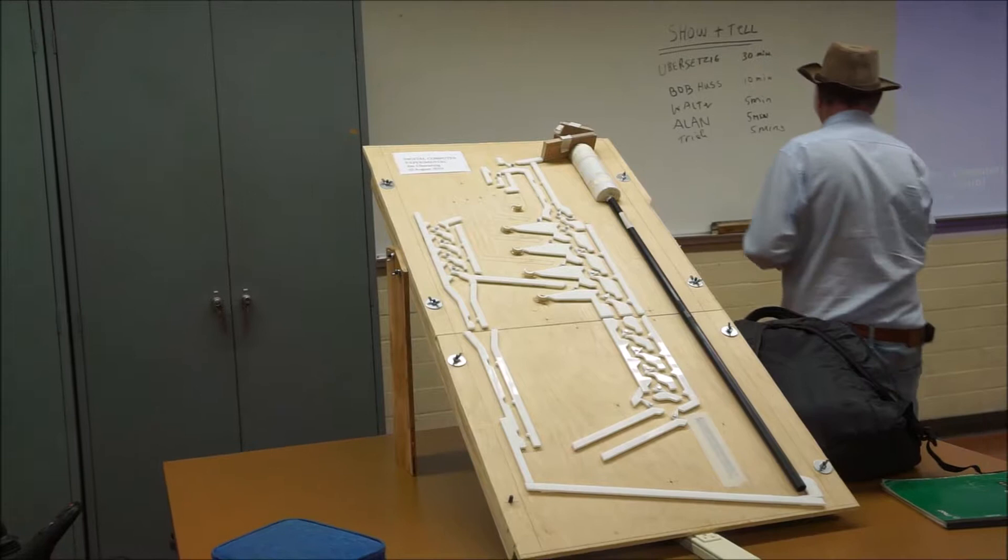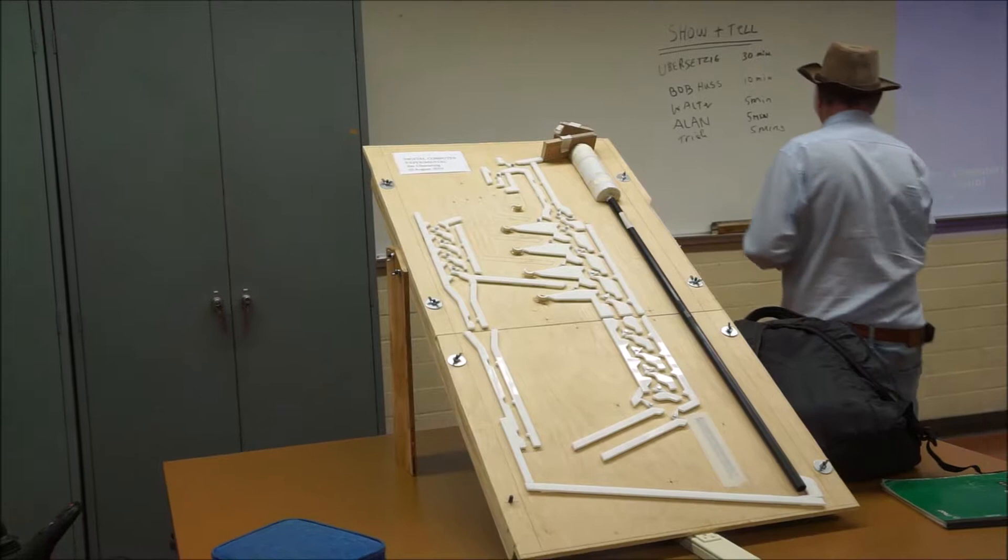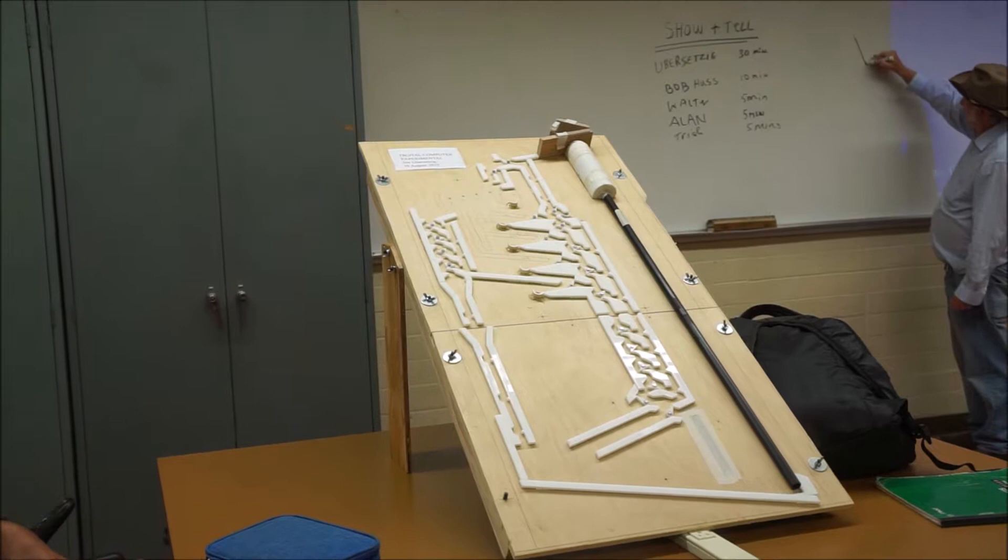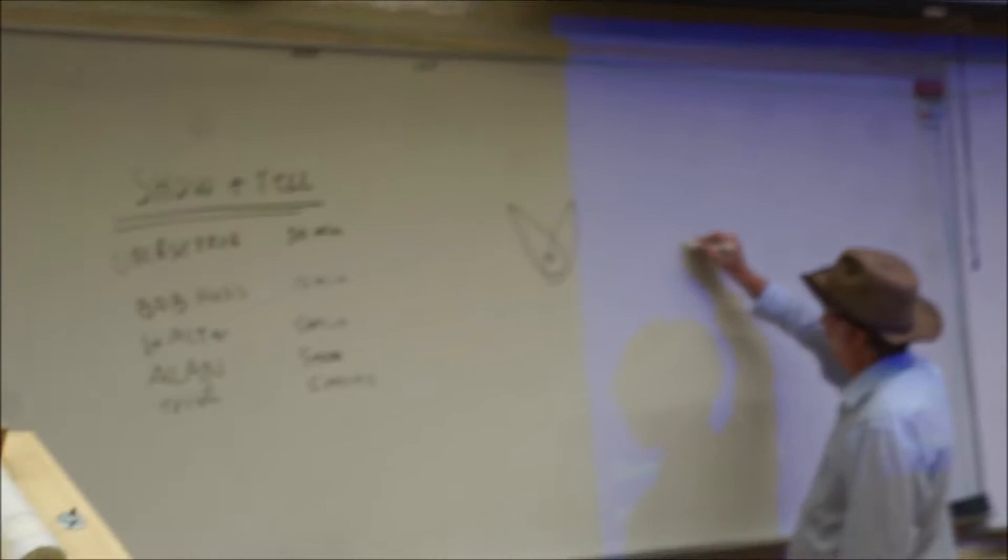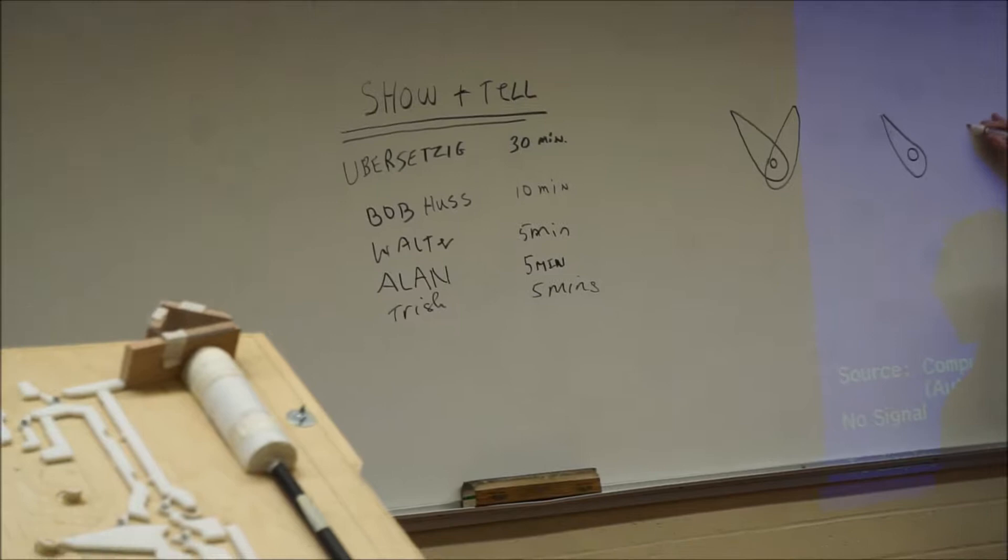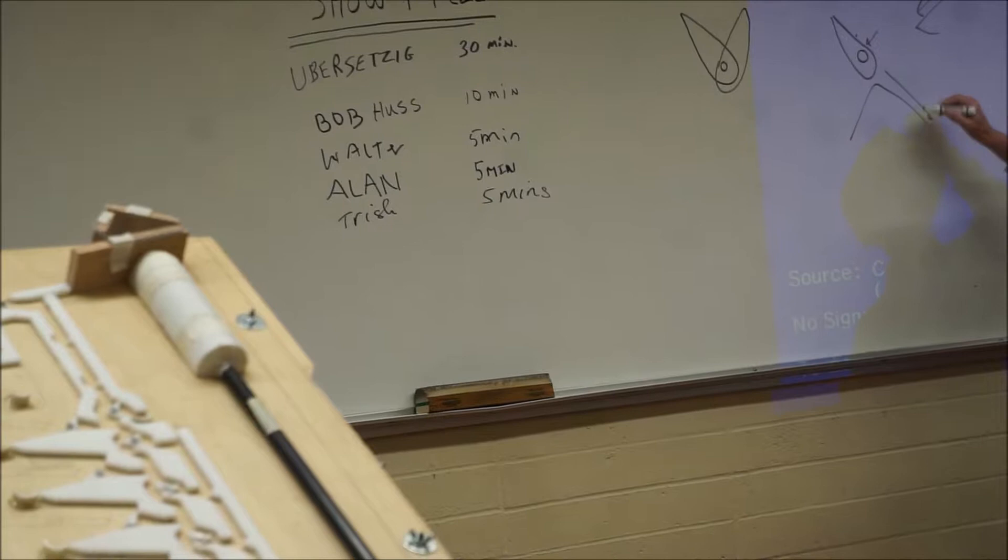Basically the logic gates in this machine are little pieces that look something like this. And they can rotate from about there to about there. If one of them is this way, and a ball is rolling down, and it hits here, then it simply rolls off this way. It hits that and rolls down.